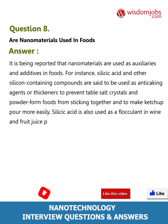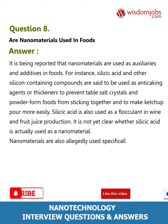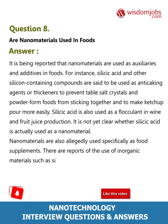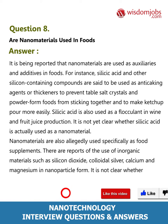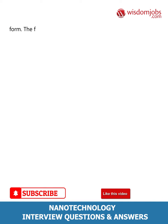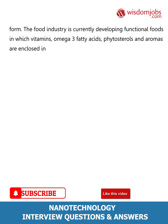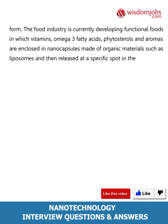Silicic acid is also used as a flocculant in wine and fruit juice production. It is not yet clear whether silicic acid is actually used as a nanomaterial. There are also reports of inorganic materials such as silicon dioxide, colloidal silver, calcium, and magnesium in nanoparticle form being used as food supplements. The food industry is also developing functional foods in which vitamins, omega-3 fatty acids, phytosterols, and aromas are enclosed in nanocapsules made of organic materials such as liposomes, then released at a specific spot in the body.